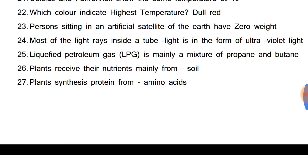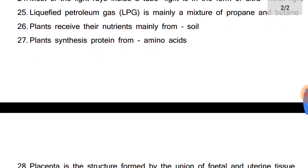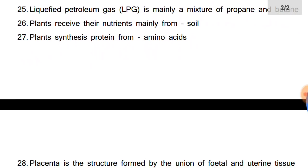Liquefied petroleum gas, also known as LPG, is mainly a mixture of propane and butane. Plants receive their nutrients mainly from soil. The nutrients required by plants are nitrogen, phosphorus, potassium, calcium, sulfur, magnesium, carbon, oxygen, hydrogen, etc.